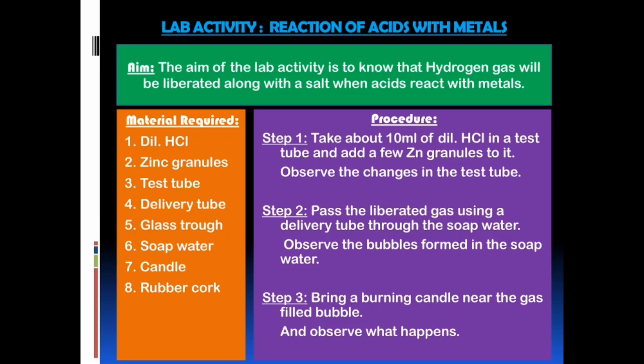Now it is time for the lab activity. The aim of the lab activity is to know that hydrogen gas will be liberated along with a salt when acids react with metals. Material required: dilute HCl, zinc granules, test tube, delivery tube, glass trough, soap water, candle, and rubber cork.